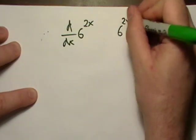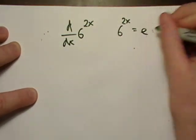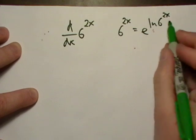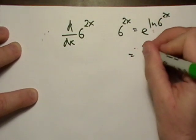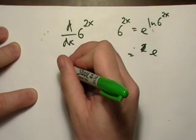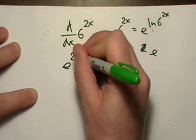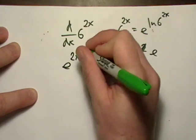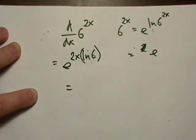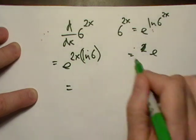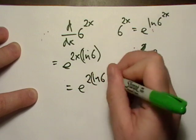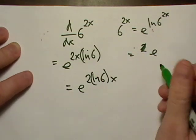Again, six raised to the two x, we can rewrite that as e raised to the natural log of six to the two x. And then we can go ahead and bring that down in front. So it's going to be e raised to the two x natural log of six. And just put that in parentheses so you don't get careless there. Let's just go ahead and let's move the x over here. We'll have e times two natural log of six times x.